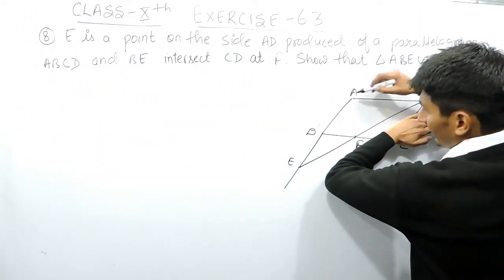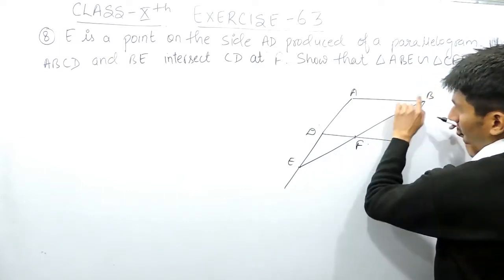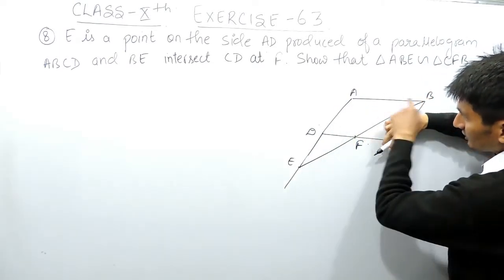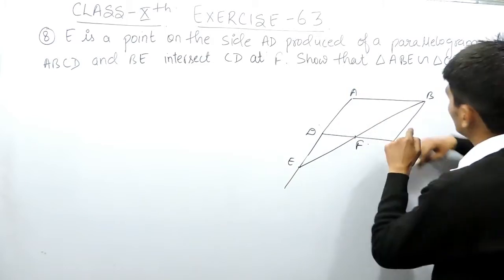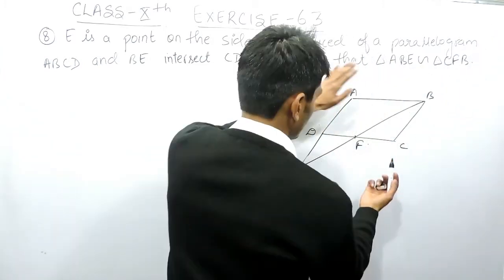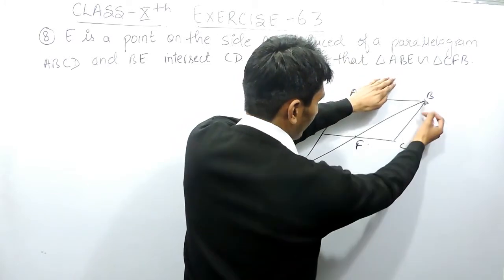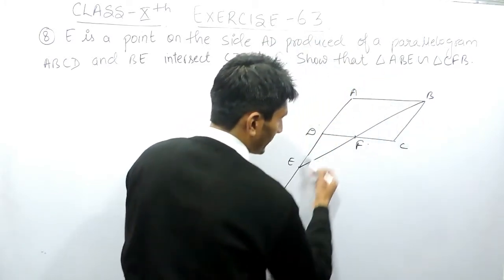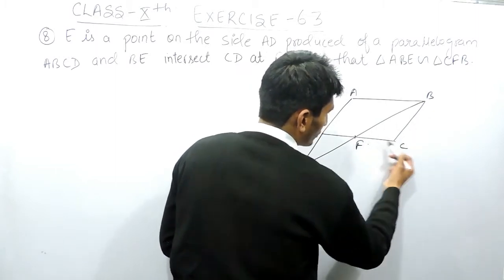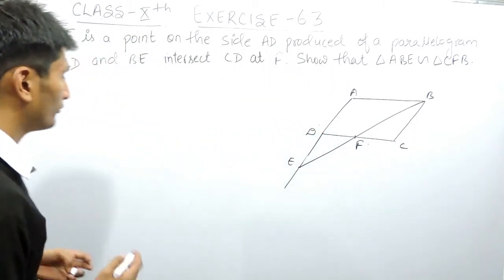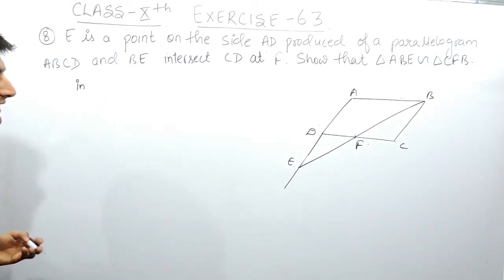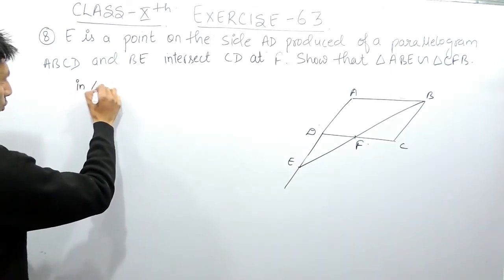Now you have to prove that triangle ABE — this complete triangle — is similar to triangle CFB, which is the smaller one. So you have to prove that this bigger triangle is similar to this smaller one.